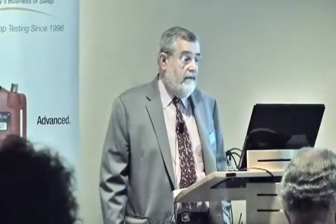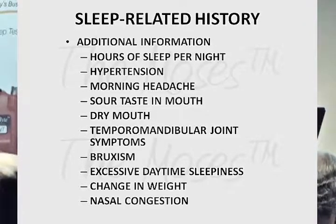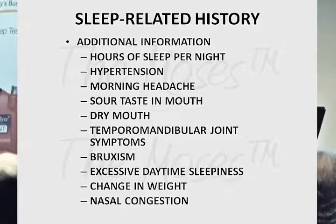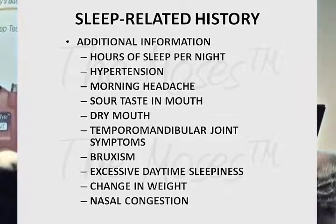Do you snore in all positions or only on your back? Additional information: hours of sleep per night, high blood pressure, morning headaches, sour taste in the mouth, acid reflux or regurgitation during sleep. Acid reflux is more common in apneic patients because paradoxical breathing forces stomach acid past the esophageal valve into the throat — and people with that have an increased rate of pancreatic cancer. Also ask about dry mouth, TMJ symptoms, bruxism, excessive daytime sleepiness, change in weight, and nasal congestion.